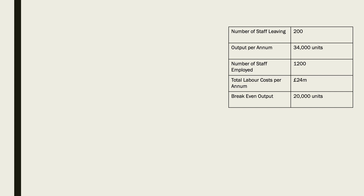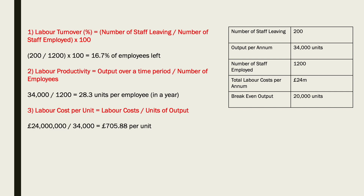So just put those numbers to the side there. Key thing is knowing the formulas. Labour turnover is number of staff leaving divided by number of staff employed, times by 100, because labour turnover is expressed as a percentage. So 200 divided by 1,200, times 100 — that gives 16.7% labour turnover.